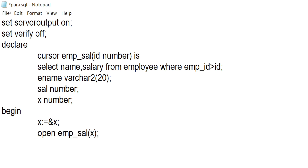While opening the cursor, we have passed only one number type value, as we have taken only one parameter at the time of declaration. The number of values and their data types passed at the time of opening will be the same as that of the parameters during declaration. Note that I have passed the value by taking user input, but we can also pass constant values.